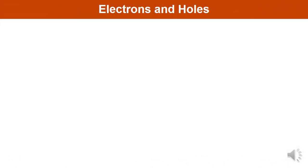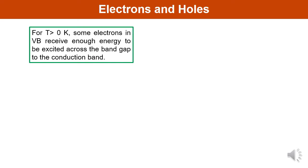What is an electron and what is a hole? When T is greater than zero Kelvin, some electrons from the valence band receive enough energy to be excited across the band gap and reach the conduction band, where they participate in conduction. This results in a material with some electrons in an otherwise empty conduction band, and some unoccupied states in an otherwise filled valence band.